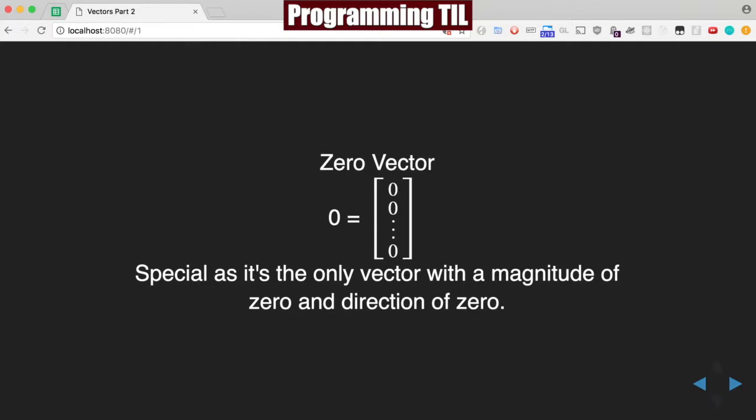First, let's define what the zero vector is. It's denoted by 0 and is when every single element is 0. It's a special vector and has a magnitude of 0 and a direction of 0.